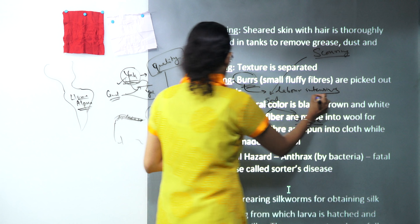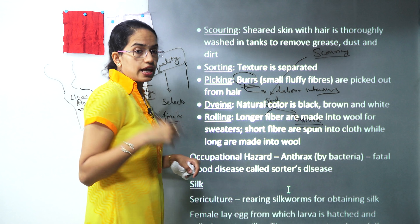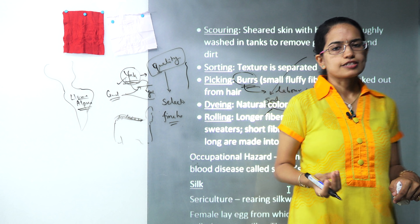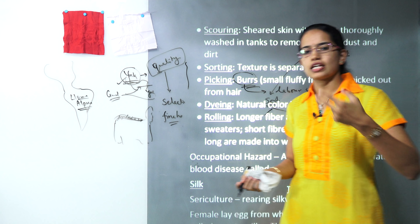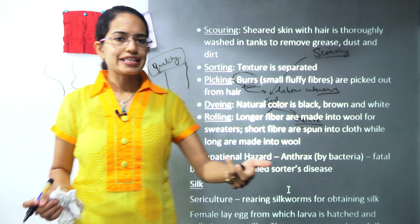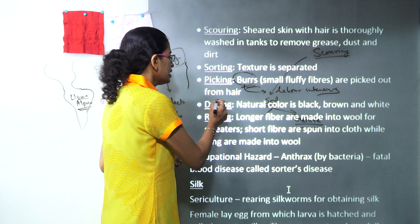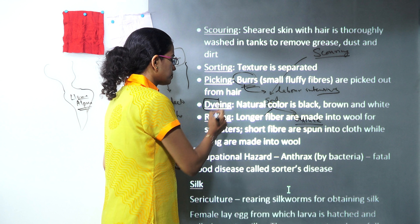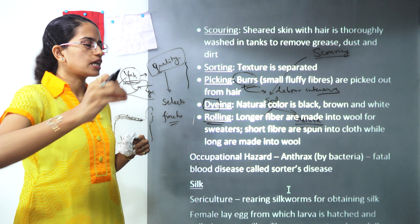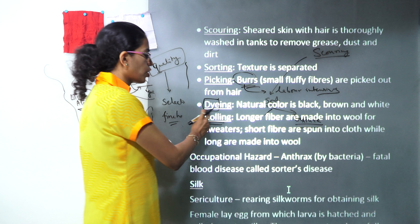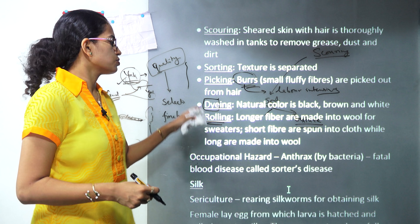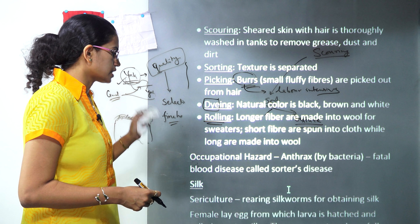After picking, you have coloring of the shawls or woolen material produced. The original colors are only three: black, brown, and white. If you want any other color, you have to dye it. So dyeing takes place, and finally rolling, where longer fibers are converted into sweaters and shorter fibers are converted into wool rolls. Those are the processes that take place.